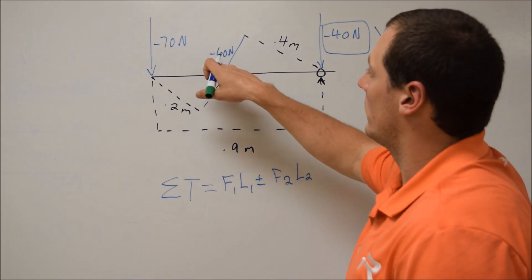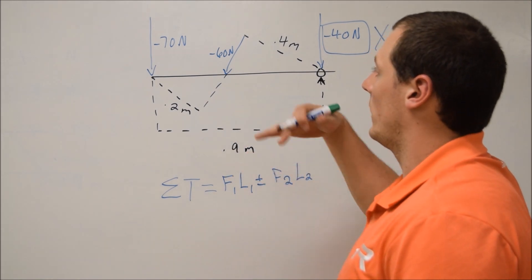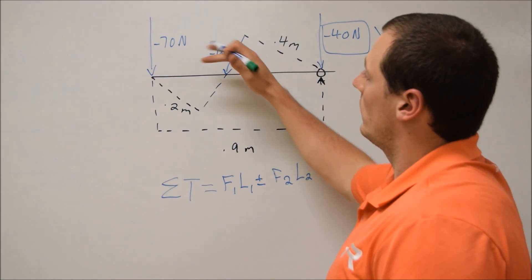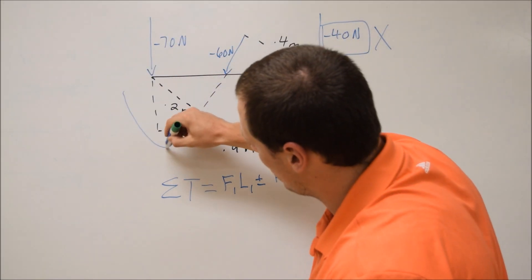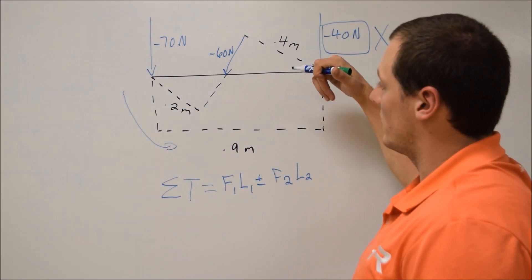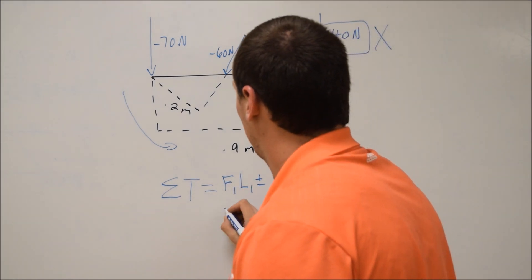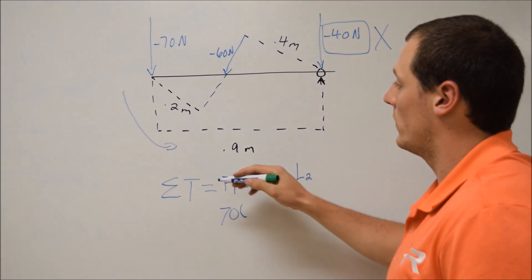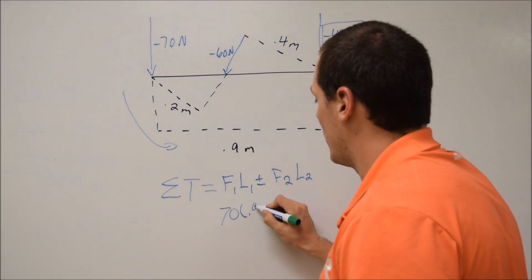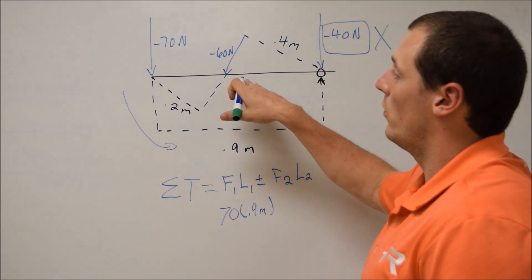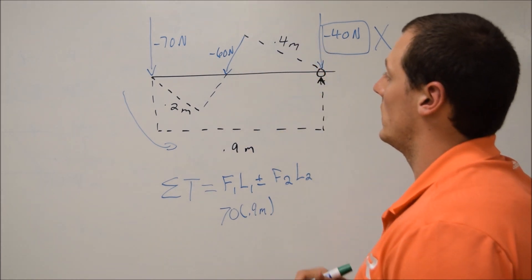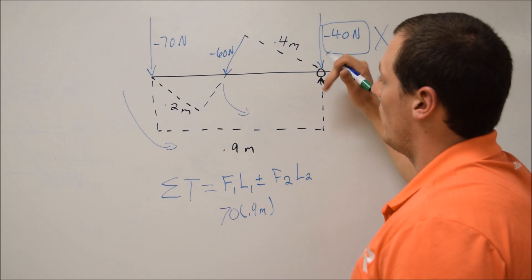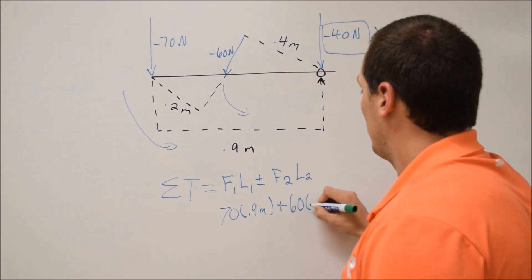We already know the forces — now we just need to figure out which length to use. Starting with the 70 N force: it's pushing in a counterclockwise direction, so through the right-hand rule it's positive. Our first term is positive 70 times the length — since it's perpendicular to the axis of rotation, we use the horizontal distance of 0.9 meters. For the 60 N force, it's also going to cause a counterclockwise rotation, which is again positive.